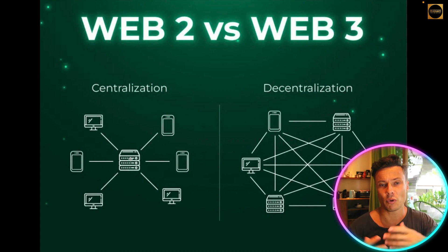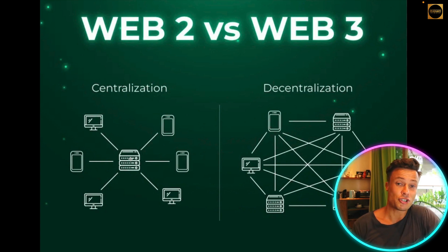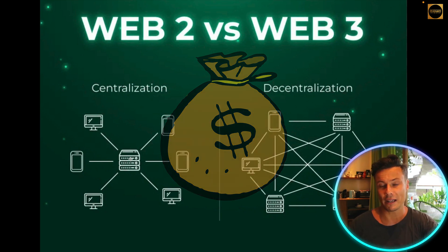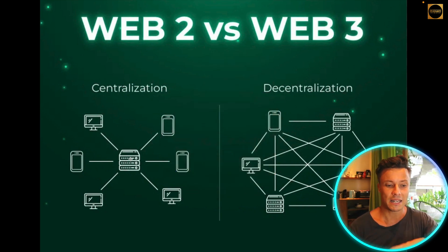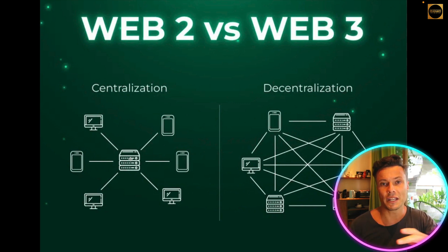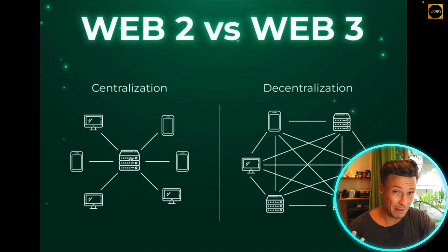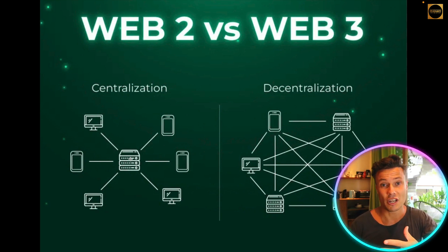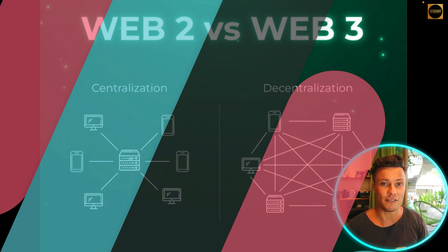Trustless systems might sound a bit weird, but what I mean is: instead of traditional banking where if I wanted to send you money I would have to do it via my bank to your bank, this can now work through things like cryptocurrency where I can directly send a transaction to you, and no one in the middle has anything to do with it. This is great because it's much cheaper, it's transparent, and it gives complete freedom to the individual — taking power away from larger corporations and redistributing it between individuals.